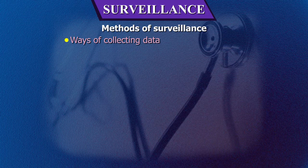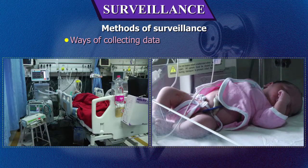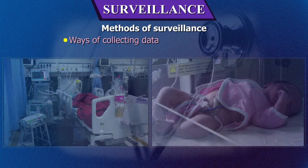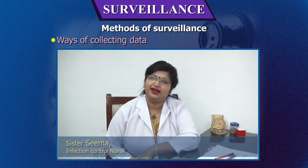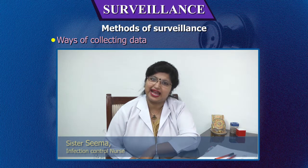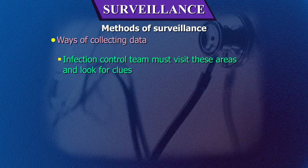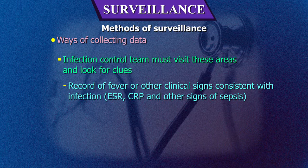There are various ways of collecting data. For example, clinical visits are required in unit-oriented surveillance in various vulnerable areas like ICU, NNU, nursery, paediatric surgery, and post-operative wards. Surveillance of HAI is conducted in vulnerable areas such as nursery, gynaecology, MICU, ICU, paediatric ICU, and NNU. Data is collected on a daily and monthly basis. The infection control team must visit these areas and look for clues such as records of fever or other clinical signs consistent with infection.